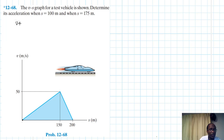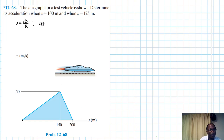These are the equations that we intend to use — the three basic kinematic equations, and the derived one from the two, which is a·ds = v·dv.